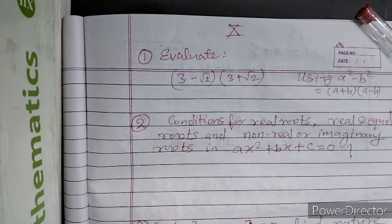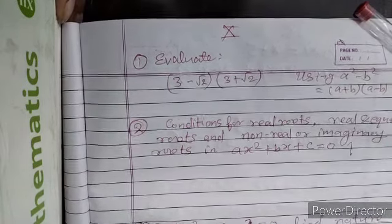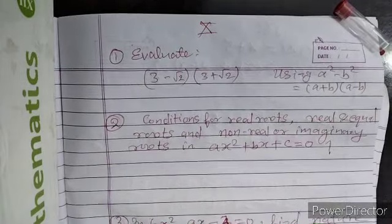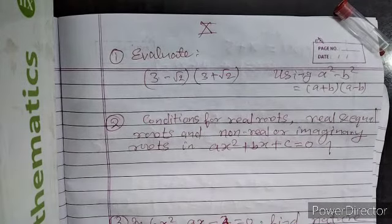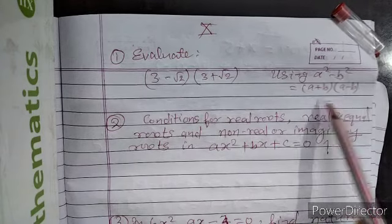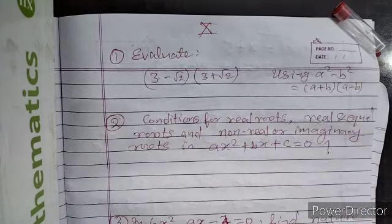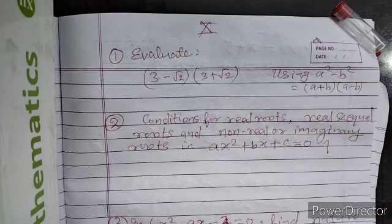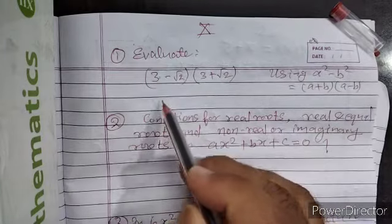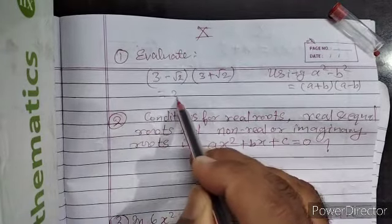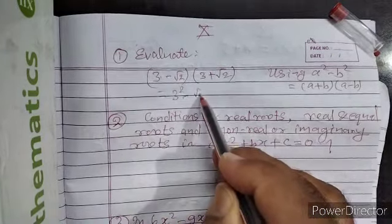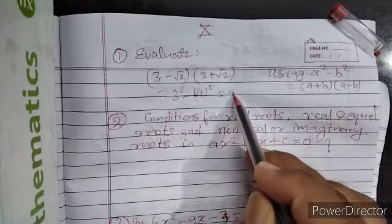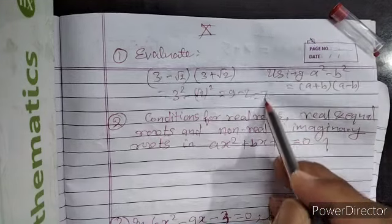Dear students, in question number 1, you have to evaluate 3 minus root 2 into 3 plus root 2. You know that the formula a plus b into a minus b equals a square minus b square. So, using this formula, this will be equal to square of 3 minus square of root 2, that is equal to 9 minus 2, equal to 7.